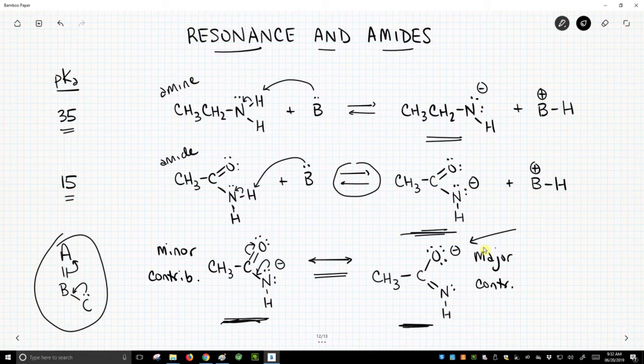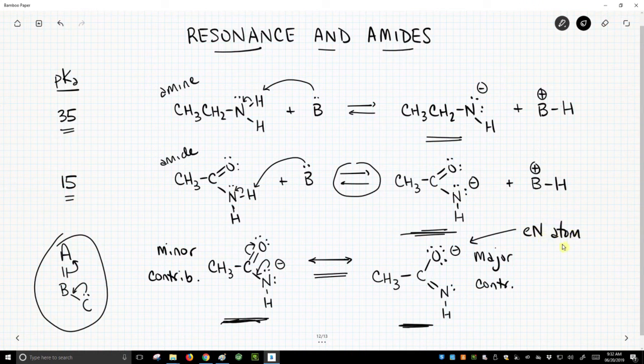But this is really, as we consider the resonance forms, it's an electronegativity issue. The negative charge is on a more electronegative atom. Now we had to look at resonance to get to that conclusion, but this is really an electronegative atom situation. So why are amides more acidic than amines? It's an electronegativity issue, but resonance allows us to visualize or access that answer.